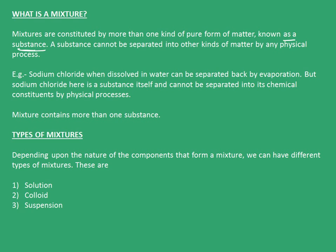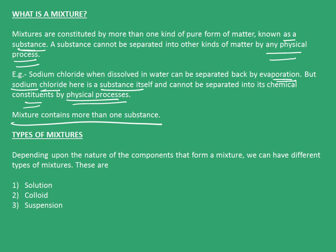A substance cannot be separated into other kinds of matter by any physical process. An example of this is sodium chloride — when dissolved in water, it can be separated back by evaporation. But sodium chloride is a substance in itself and cannot be separated into its chemical constituents, sodium and chlorine, by any physical process. A mixture contains more than one such substance. Depending upon the nature of the components, we have different types of mixtures: solution, colloid, and suspension.